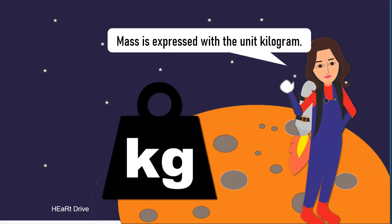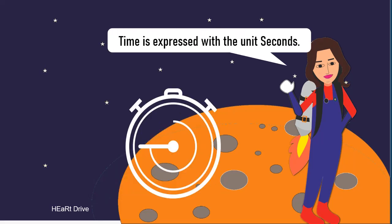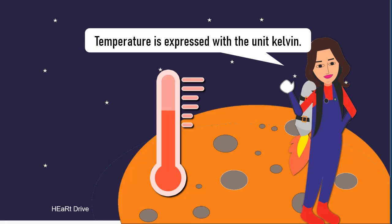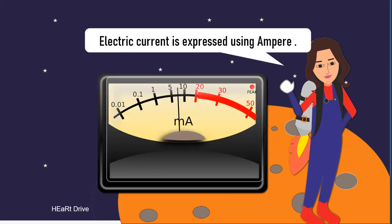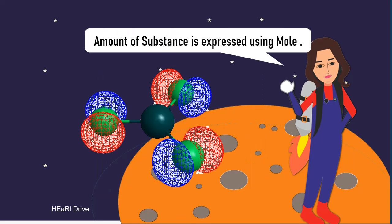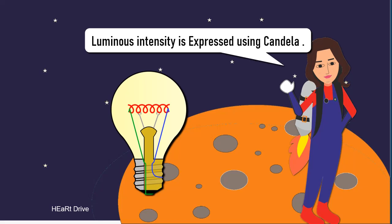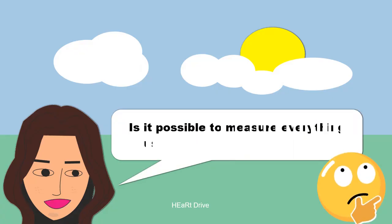Length is expressed with the unit meter. Mass is expressed with the unit kilogram. Time is expressed using seconds. Temperature is expressed using Kelvin. Electric current is expressed using ampere. Amount of substance is expressed with the unit mole. Luminous intensity is expressed using candela. So here we have the seven fundamental quantities.